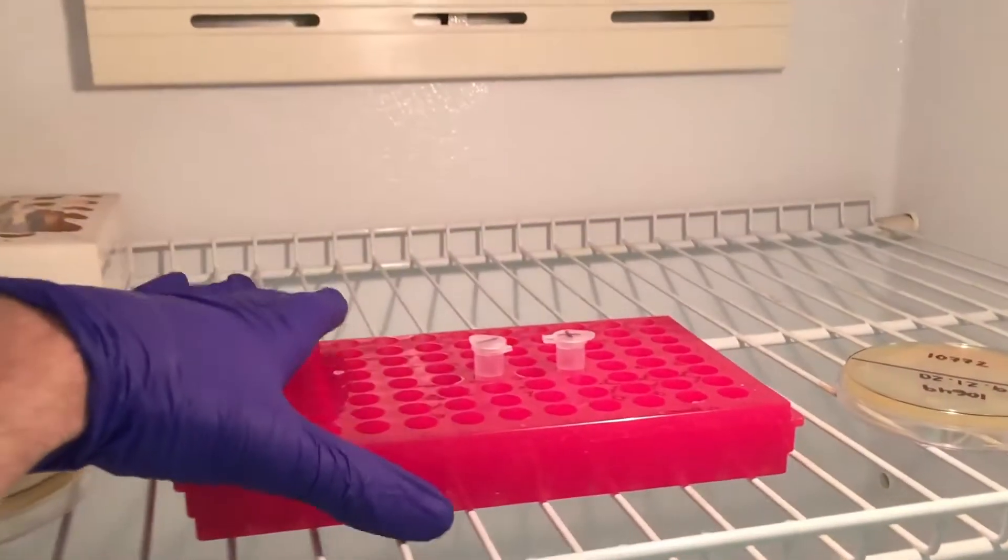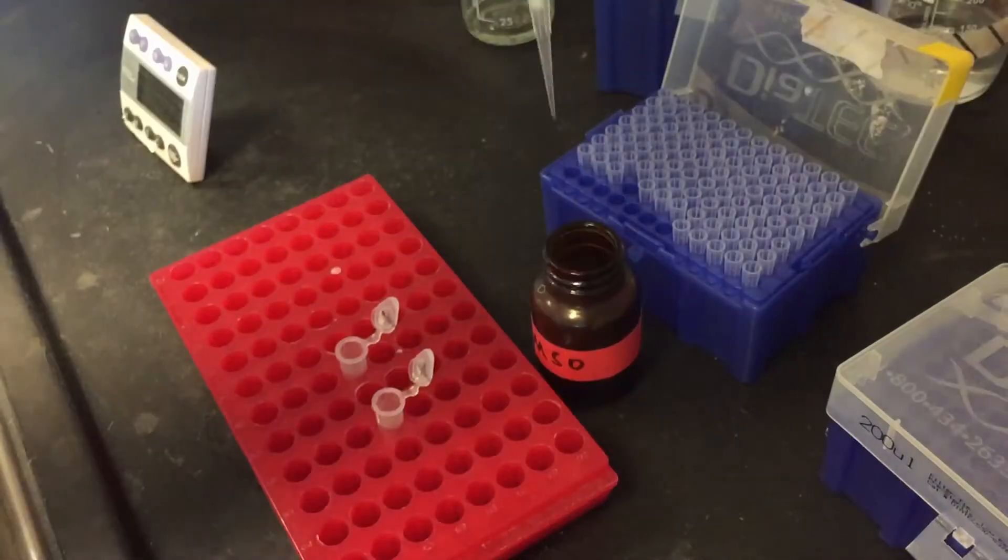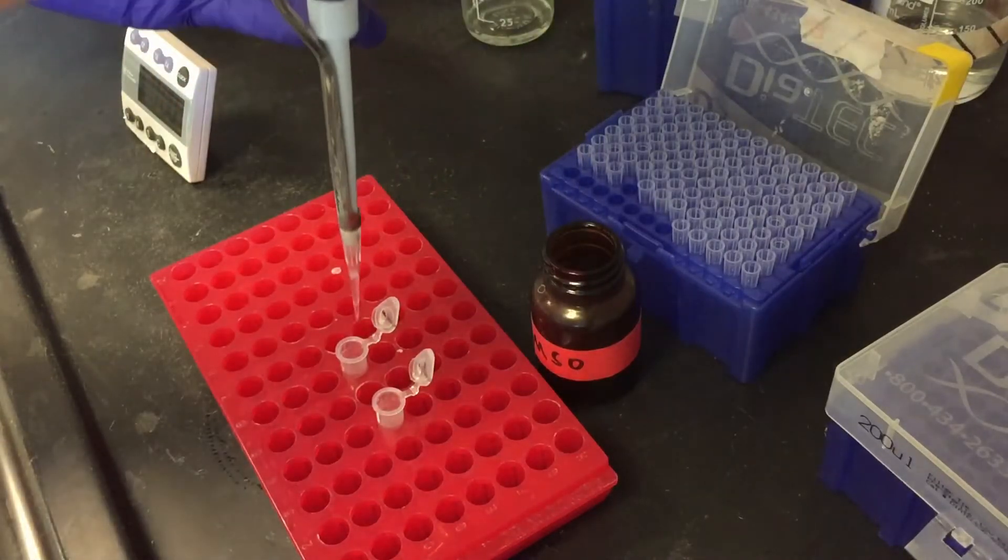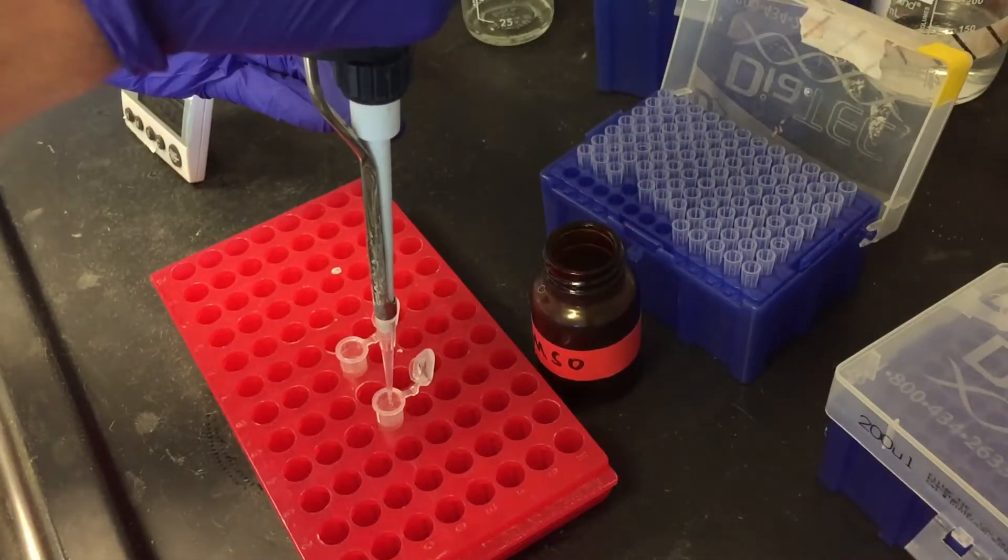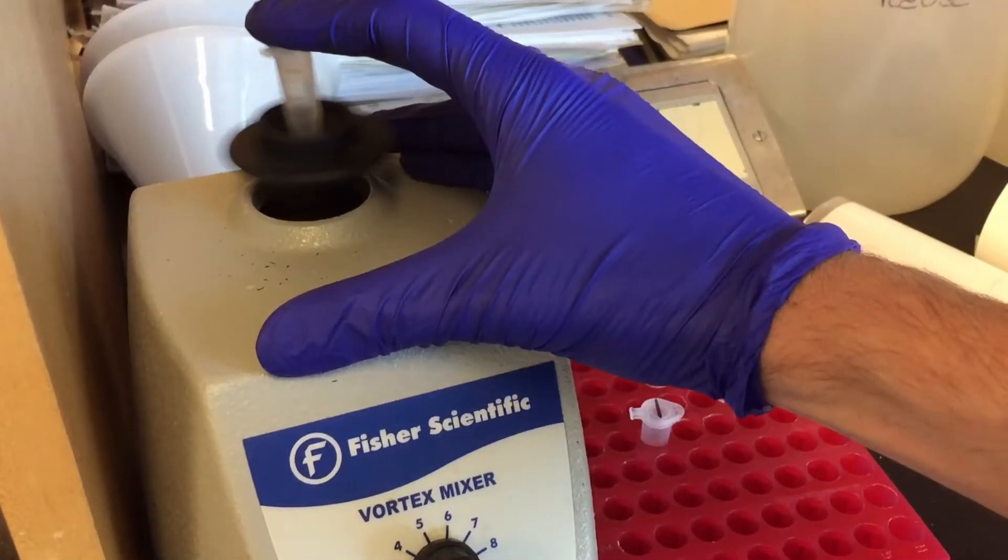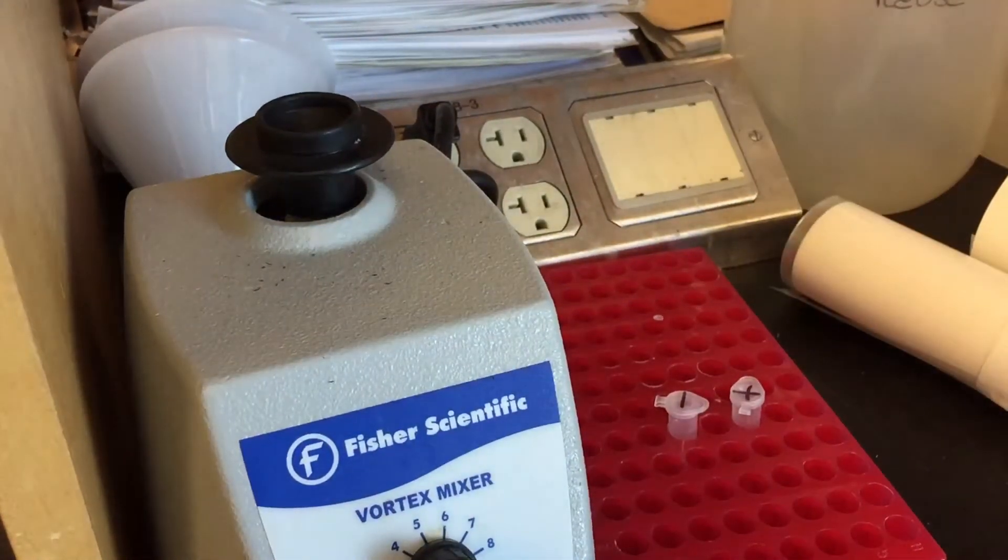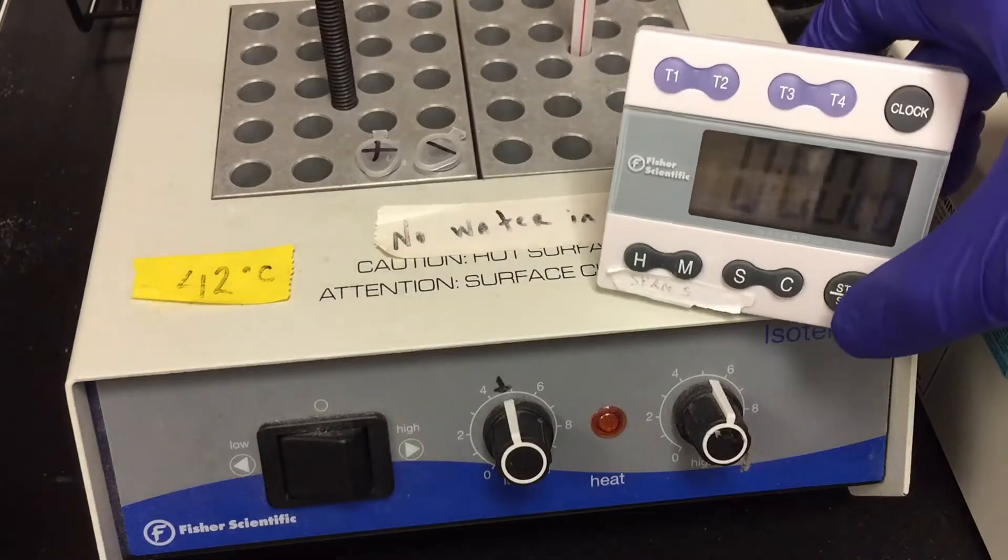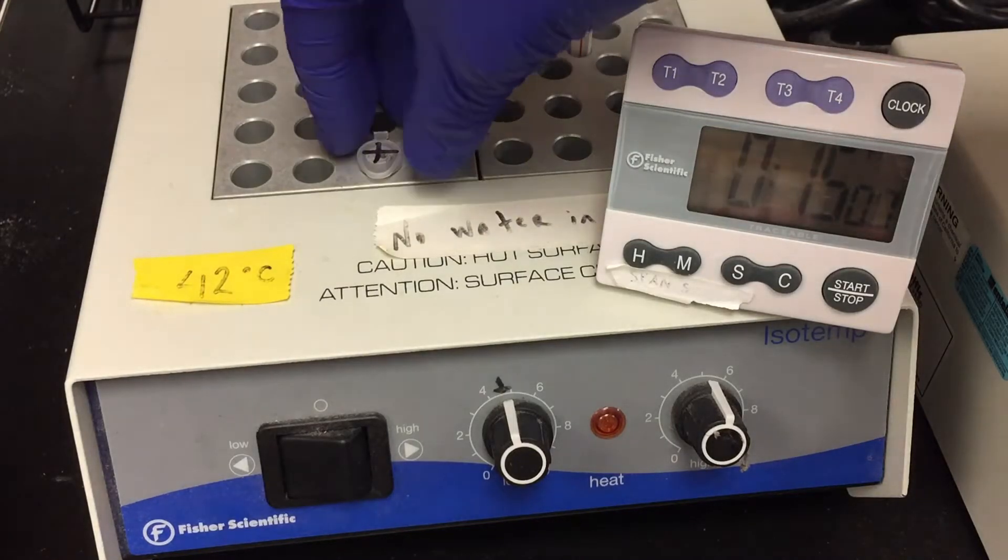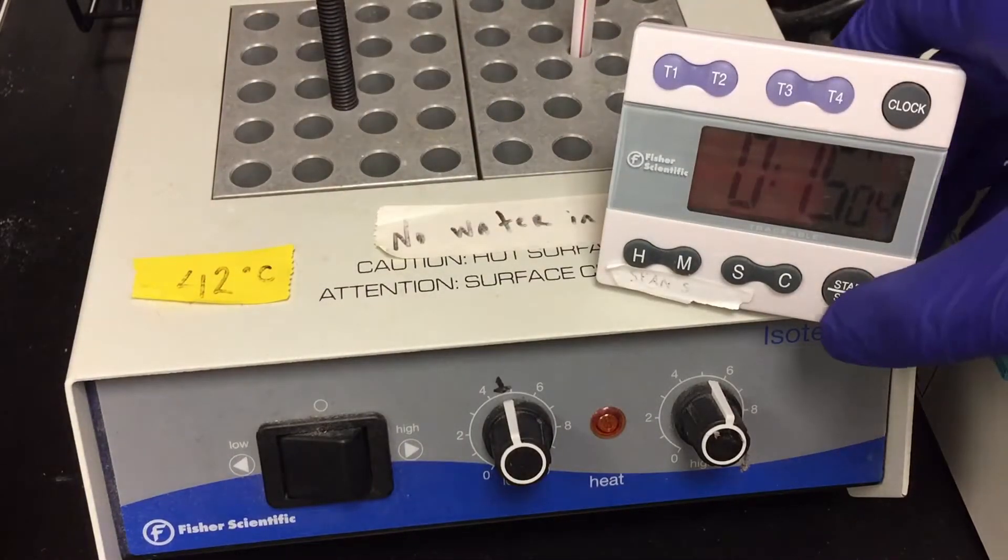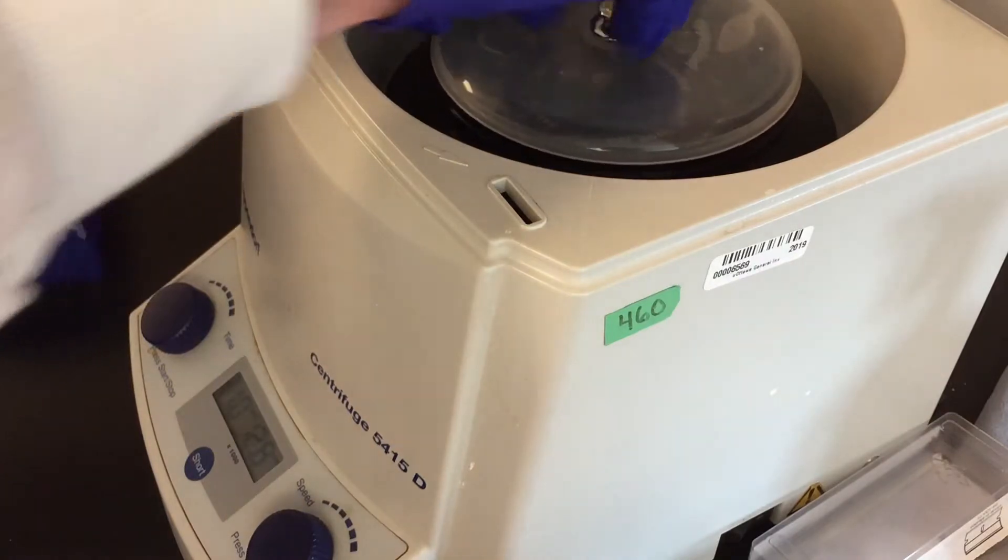After the incubation time expires, add 60 microliters of DMSO to each tube. Vortex well and incubate at 42 degrees for 15 minutes. Harvest cells by centrifugation and carefully aspirate away the PEGMIX.